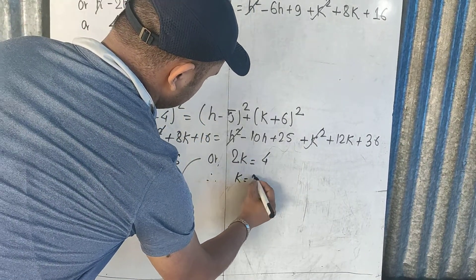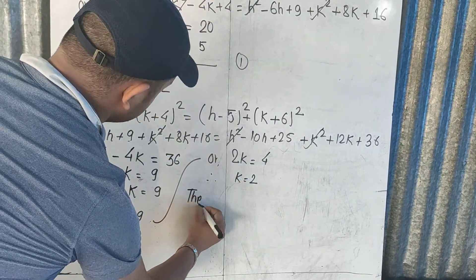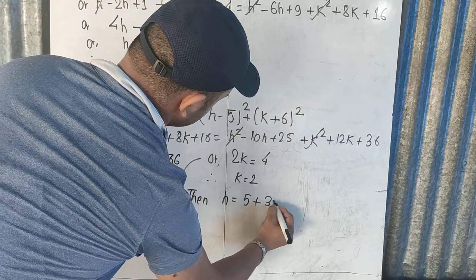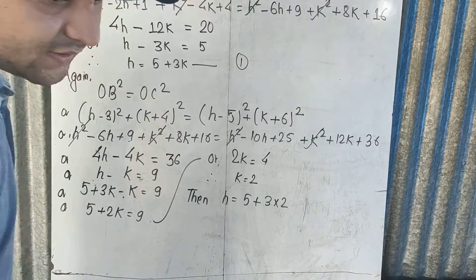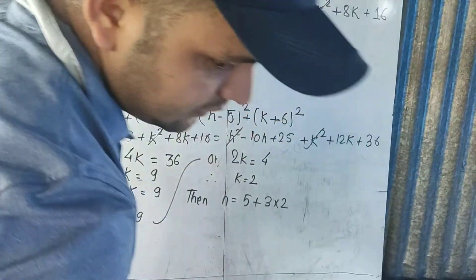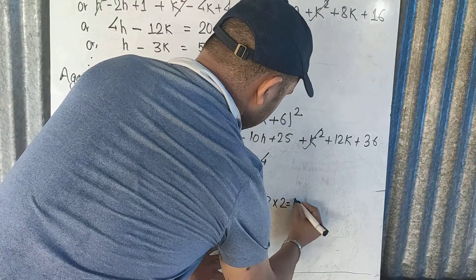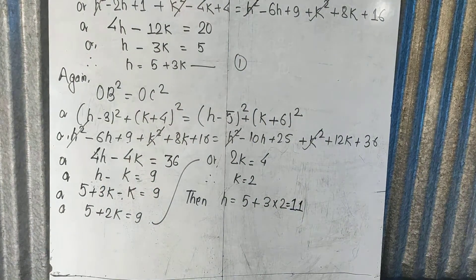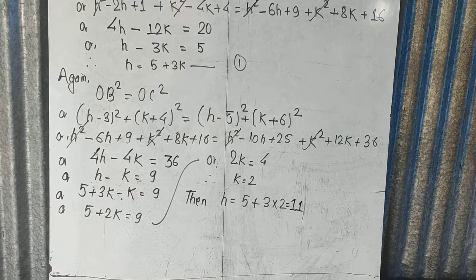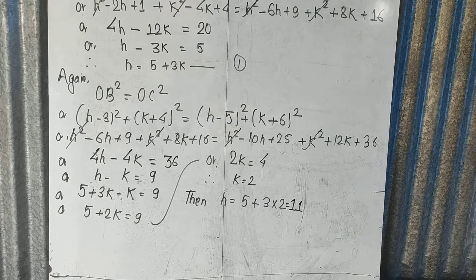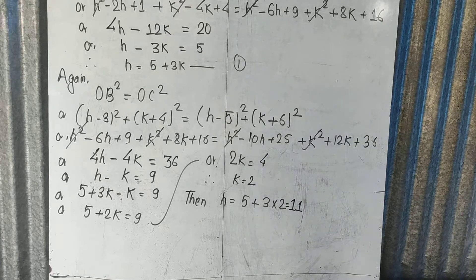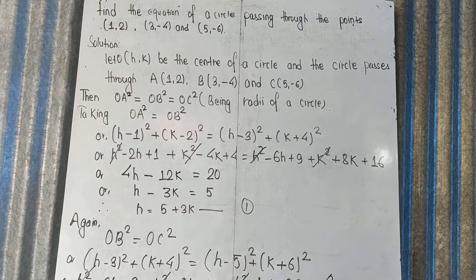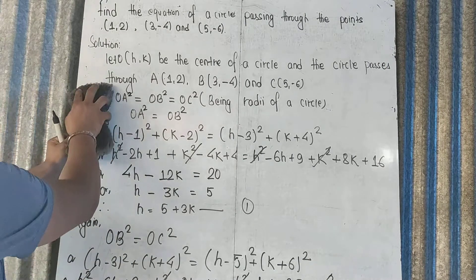Therefore, K equals 2. Then H equals 5 plus 3 times 2, which is 5 plus 6, giving H equals 11. So H minus K equals 9, confirming H equals 11 and K equals 2.